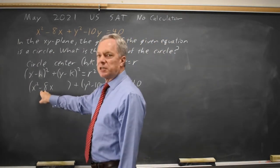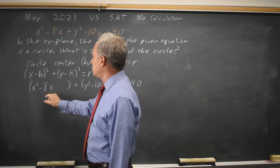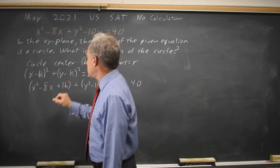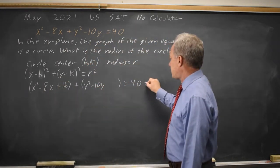To complete the square, I take half of negative 8, that's negative 4, squared, and I get plus 16. Since I add 16 on the left, I'll add 16 on the right.